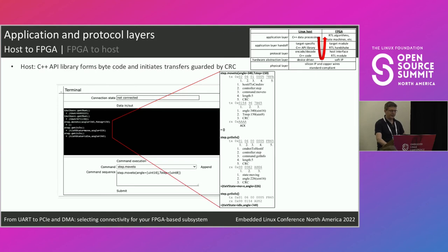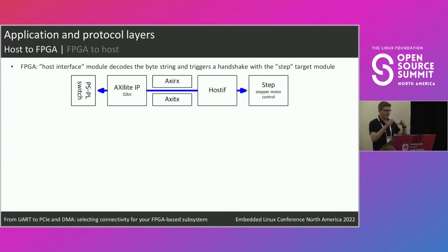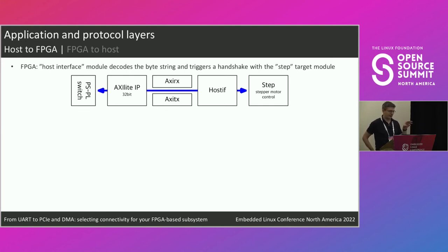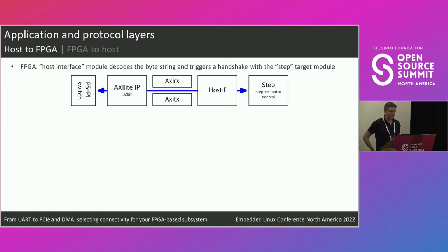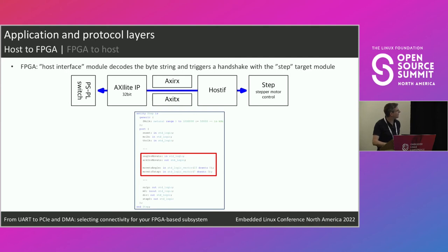On the FPGA side, everything is hierarchical. Starting from the left, there is the AXI PS-PL switch, then a VHDL module that decodes the AXI Lite transfer, which passes through an RX/TX block. In the host interface module, the decoding of the byte string takes place, and it sends a request to the stepper motor VHDL module — the endpoint of our command invocation. There is a request-acknowledge signal, and below that the parameters are passed.